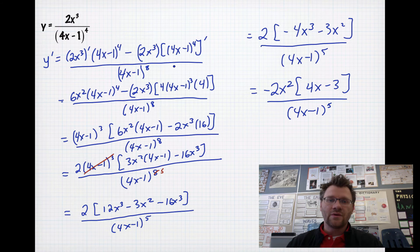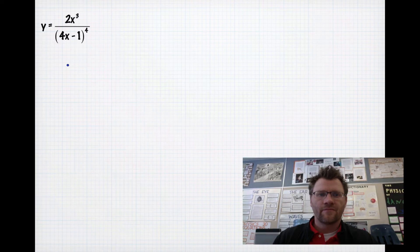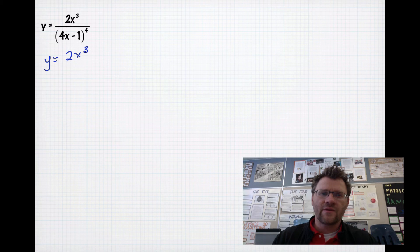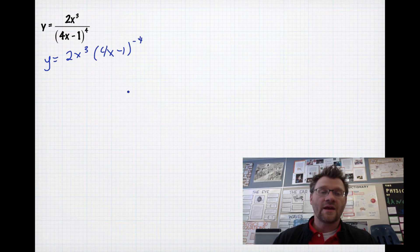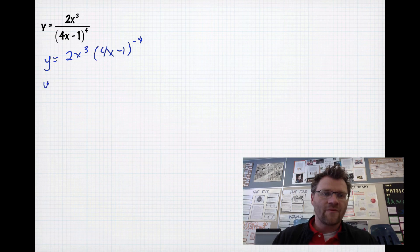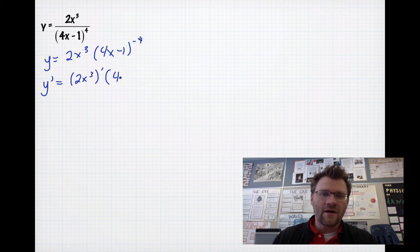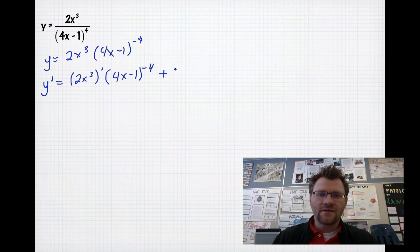Using the quotient rule combined with the chain rule, we can find the derivative of more complicated functions. Now instead of the quotient rule, we'll use the product rule to answer the same question. I rewrite 2x cubed over (4x minus 1) to the fourth power as 2x cubed multiplied by (4x minus 1) to the negative 4 — moving the factor to the top makes the exponent negative. Using the product rule: I take the derivative of the first function (2x cubed) multiplied by the original second function, plus the first function multiplied by the derivative of the second.